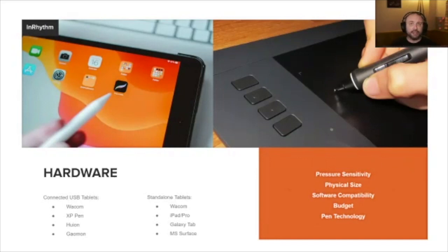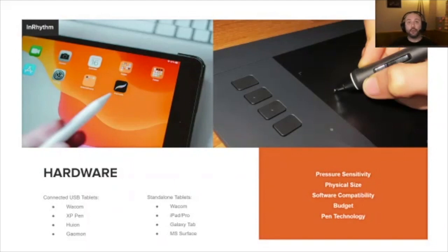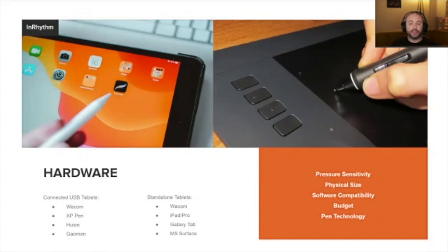There are two different kinds of tablets: connected tablets and standalone tablets. The old-school Wacom Intuos I have — that's 12 years old — is just a flat piece of plastic that records pressure with a magnet. It takes one of these little pens, and the more you push, the more it registers on screen. These are great because there's no battery in them.